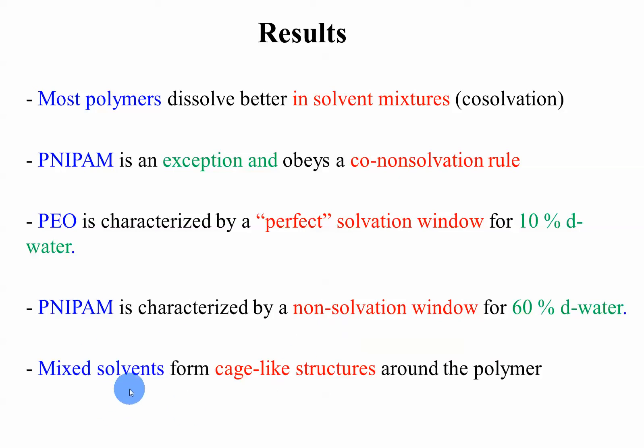Results: most polymers dissolve in better mixed solvents — PEO is characterized by a perfect solvation window, while NIPAM is characterized by a non-solvation window. Most solvents form cage-like structures around the polymer. We cannot get the structure of these cage-like structures with SANS, but we can know which ones are more effective at solvating the polymer compared to others. If the scattering intensity at Q equals zero is low, the polymer is very happy. If it's high, it's completely stressed and going to fall out of solution.